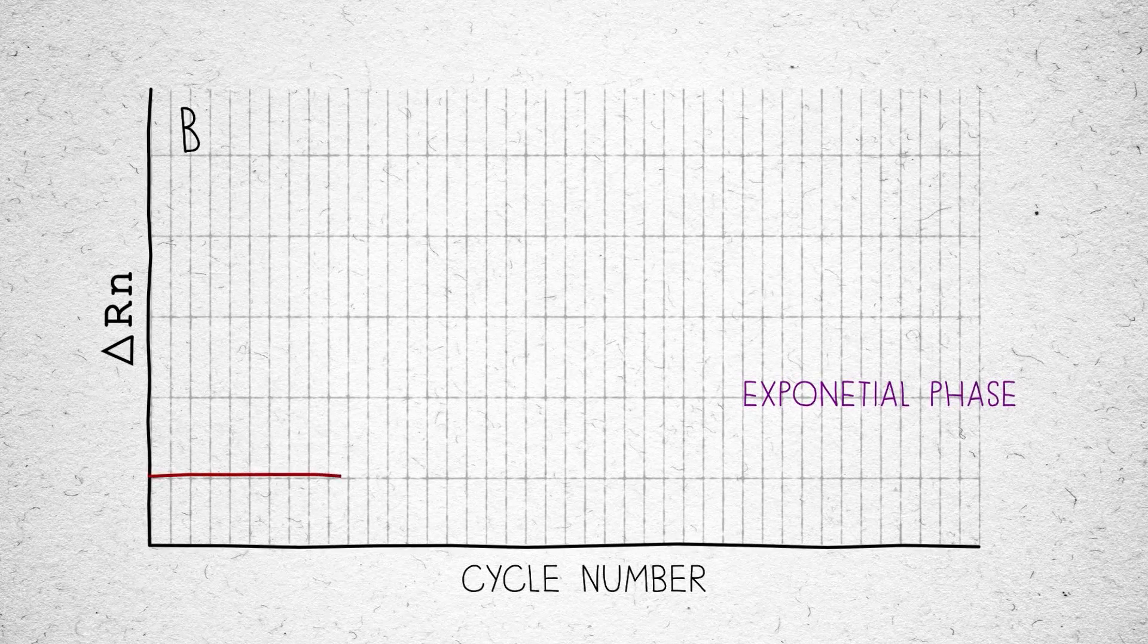The threshold cycle or CT is the PCR cycle number where an amplification curve crosses a signal threshold during real-time PCR.